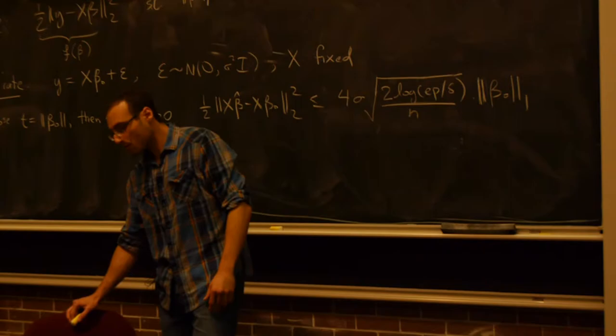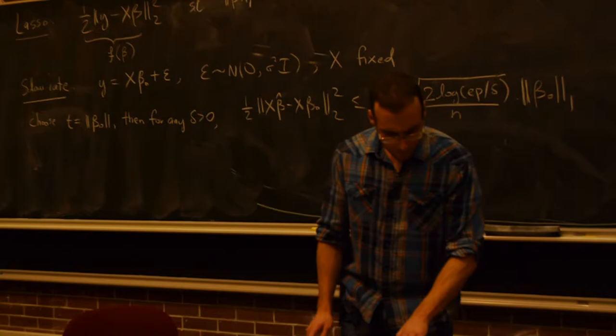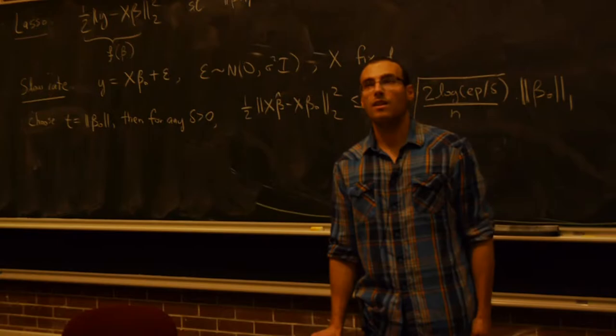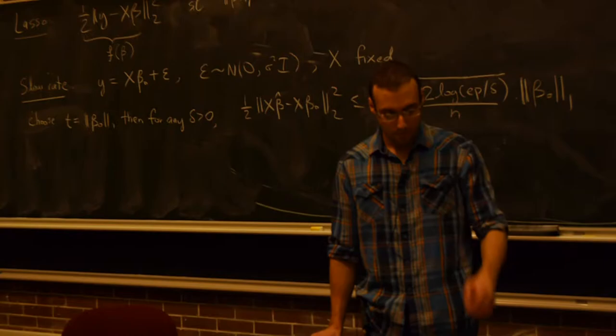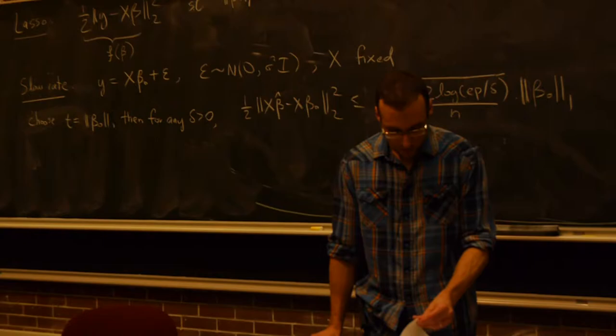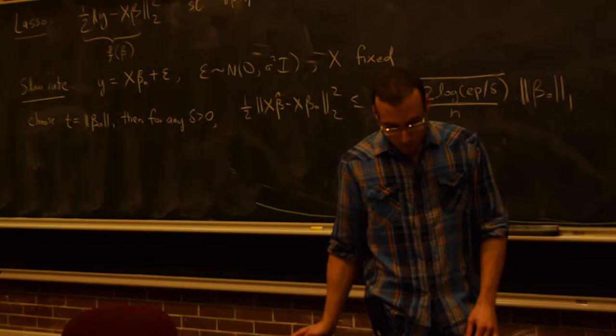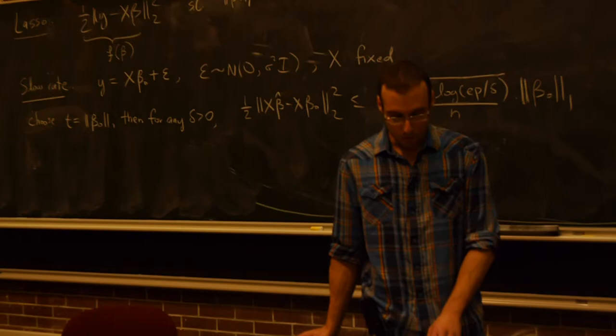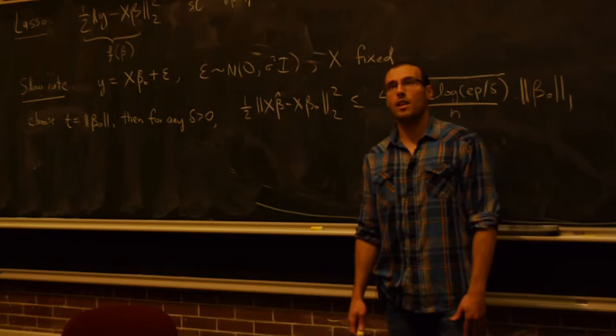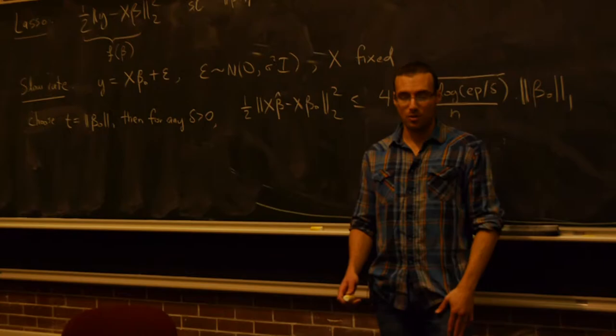Today we're going to finish off our discussion of high-dimensional regression — prove and state a bunch of results for the lasso. The notes are intentionally long so you can read up on extra stuff if you're curious. We're not going to get to everything, but there's a new section five added before today on variants, extensions, and competitors to the lasso. After we do the theory, we can pick and choose topics, or I can show simulations comparing subset selection to the lasso.